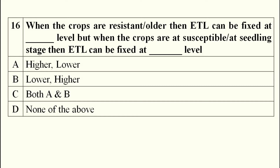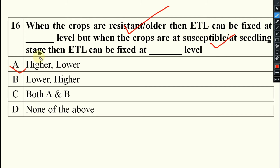Similarly, when the crop is resistant or older, the ETL is again higher. But in the case of susceptible crops or at seedling stage, ETL will be lower. Again the answer is option A.